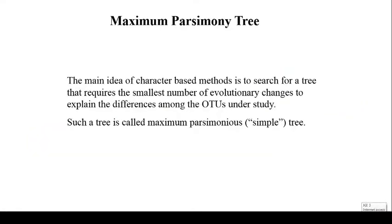Now we will go into the examples of the character-based method. There are two types of character-based methods: the most famous ones are the maximum parsimony method and maximum likelihood tree methods. For the distance-based method, the two mainly known ones are UPGMA and neighbor joining method. We will first go into an example of the character-based method, and here we have taken an example of the maximum parsimony tree. The main idea of the character-based method is to search for a tree that requires the smallest number of evolutionary changes to explain the differences among the OTUs under study.